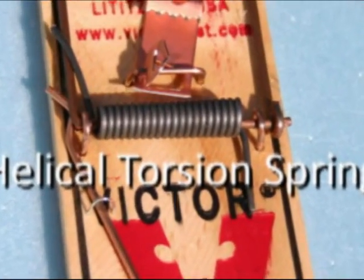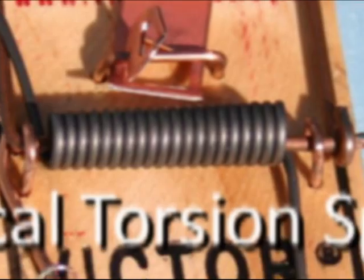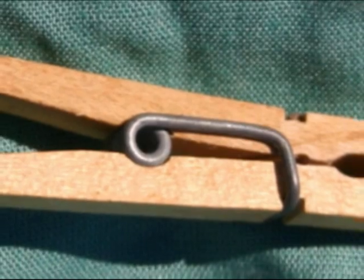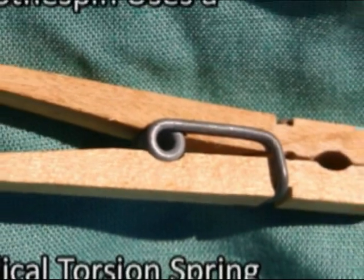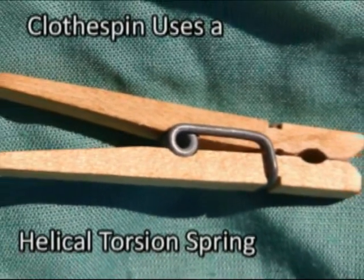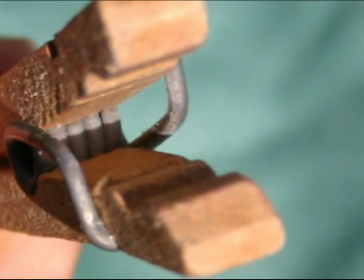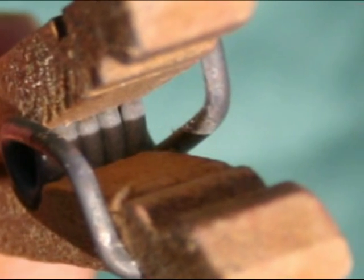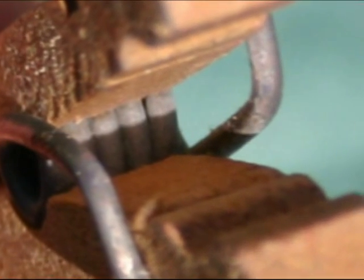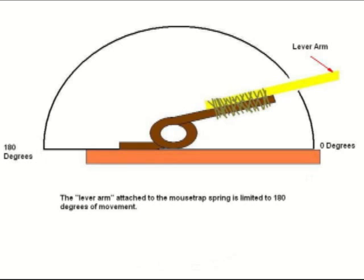The energy for the Mousetrap car is supplied by a wound helical torsion spring in the Mousetrap. Another common application for this type of spring is in the clothespin. In the Mousetrap, the spring can only rotate 180 degrees, which is one half turn.